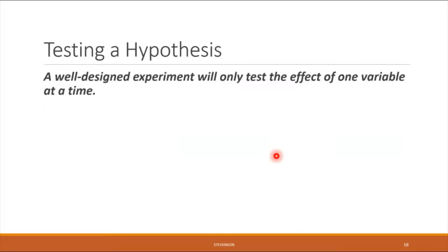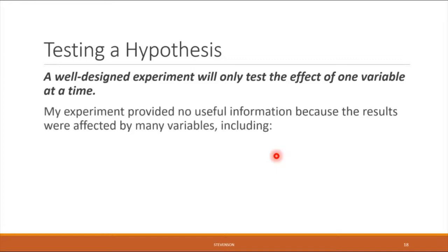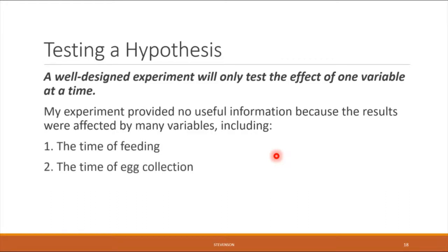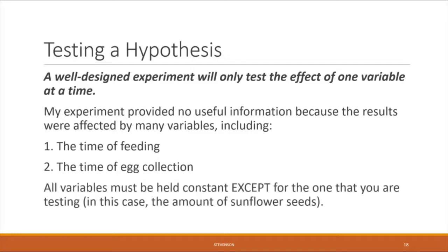On day two, who's to say the reason there were only two eggs is not because of the sunflower seeds, but because I fed and collected at different times? We can't draw conclusions because I wasn't consistent. This brings us to a very important principle: a well-designed experiment will only test the effect of one variable at a time. We only wanted to test the effect of changing the amount of sunflower seeds. All other variables — like time of feeding and time of collection — need to be held constant.